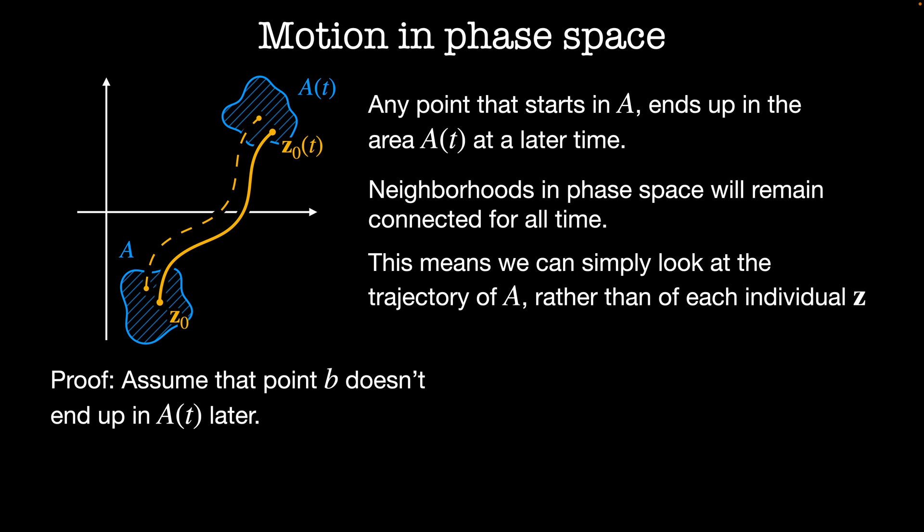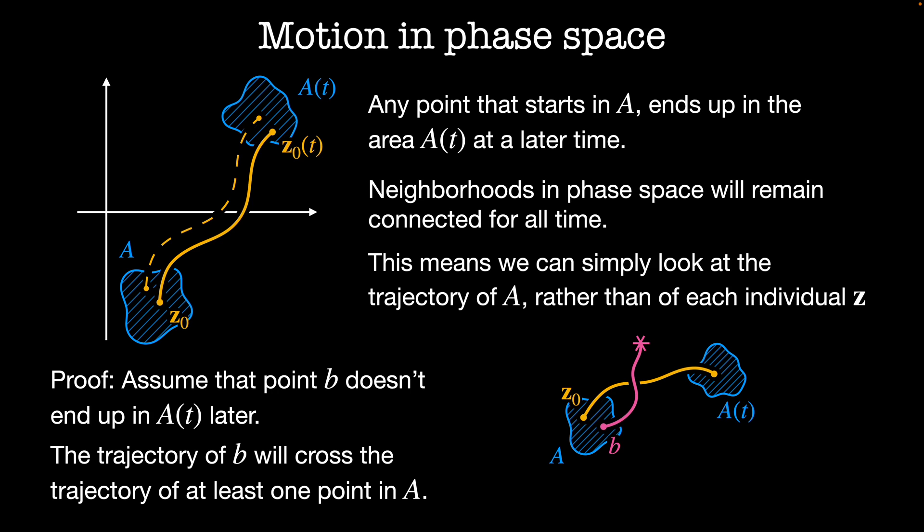In order to prove that, let's assume that some point b that starts in A doesn't end up in A of t at a later point. Imagine we have some point b that at time t ends up outside the region A of t. Then the trajectory of b must cross the trajectory of at least one point in A and this violates uniqueness.